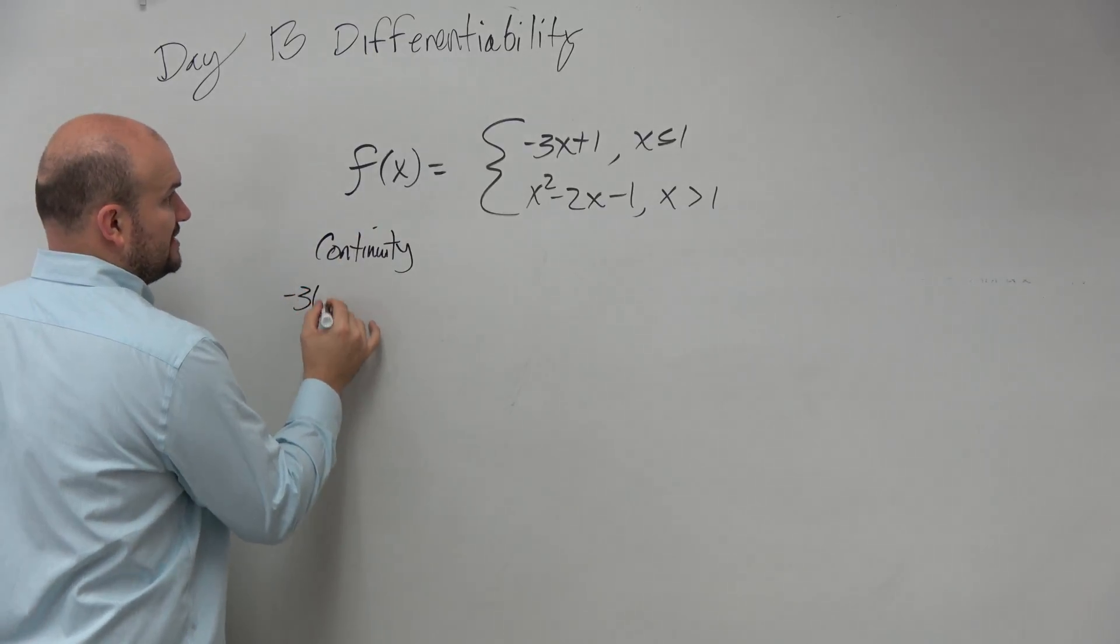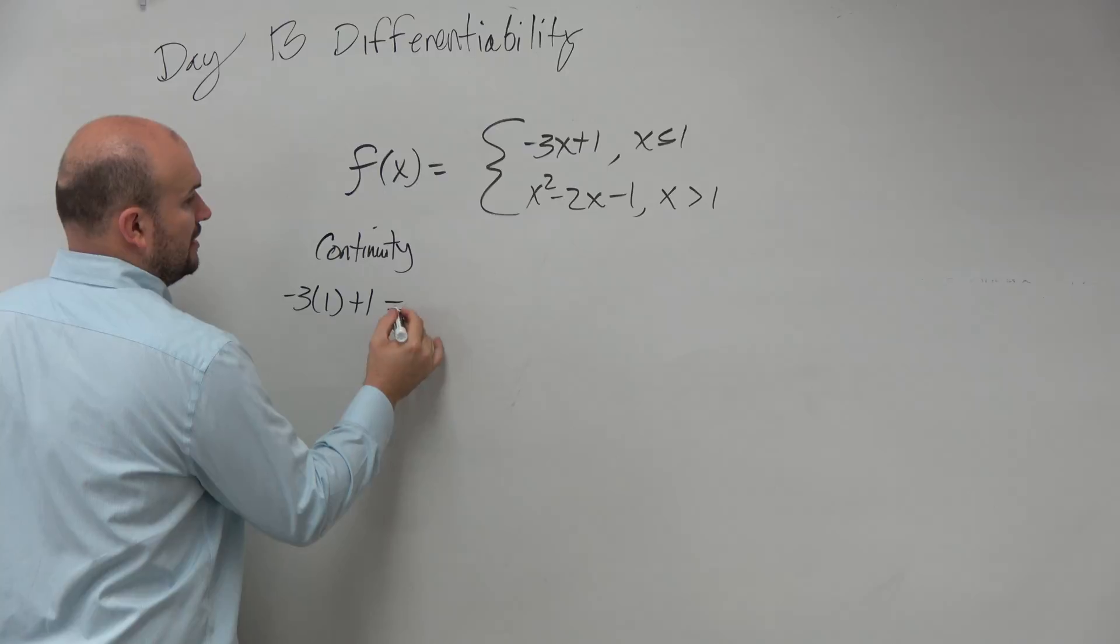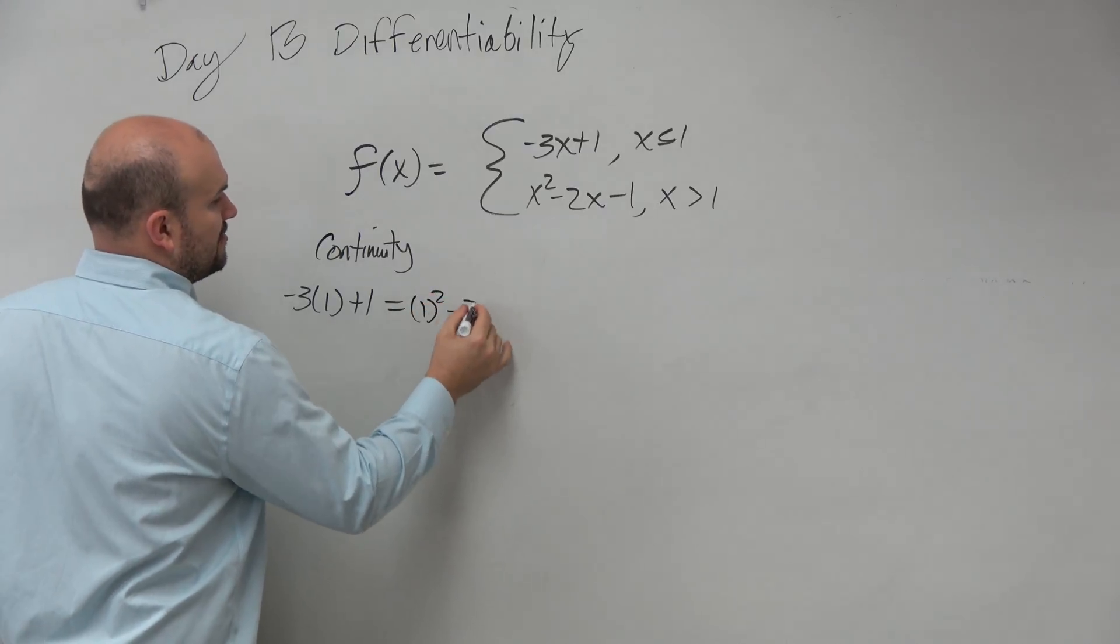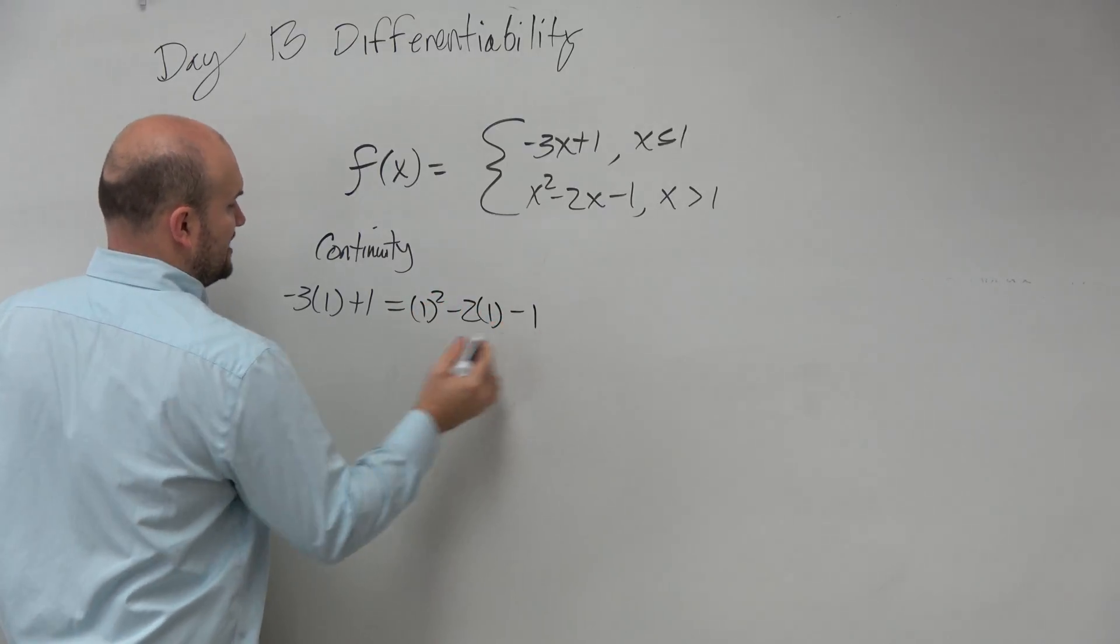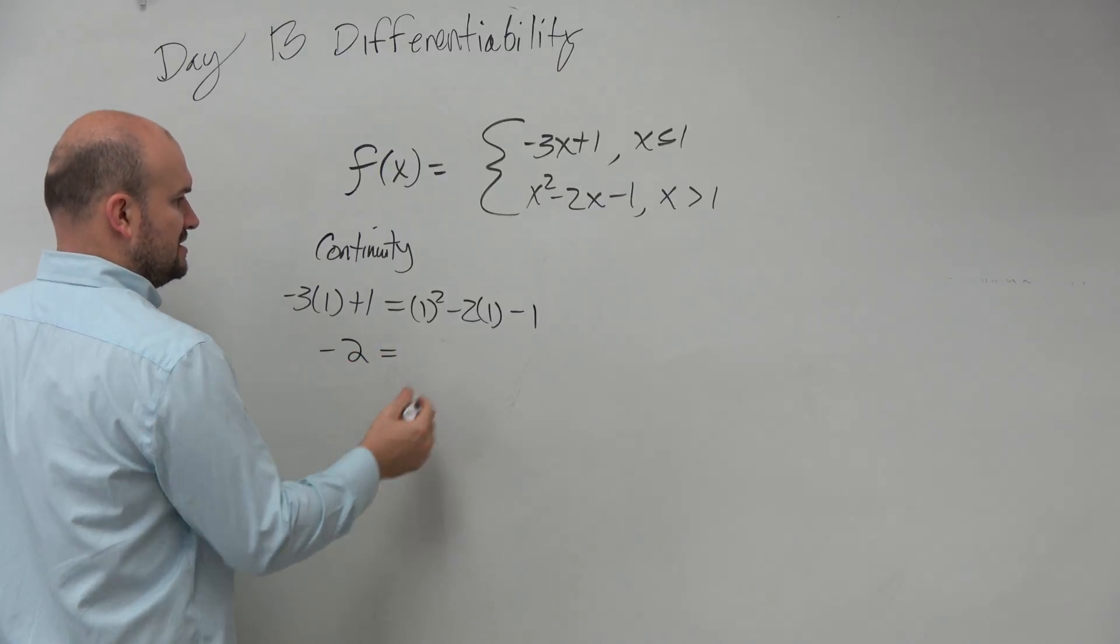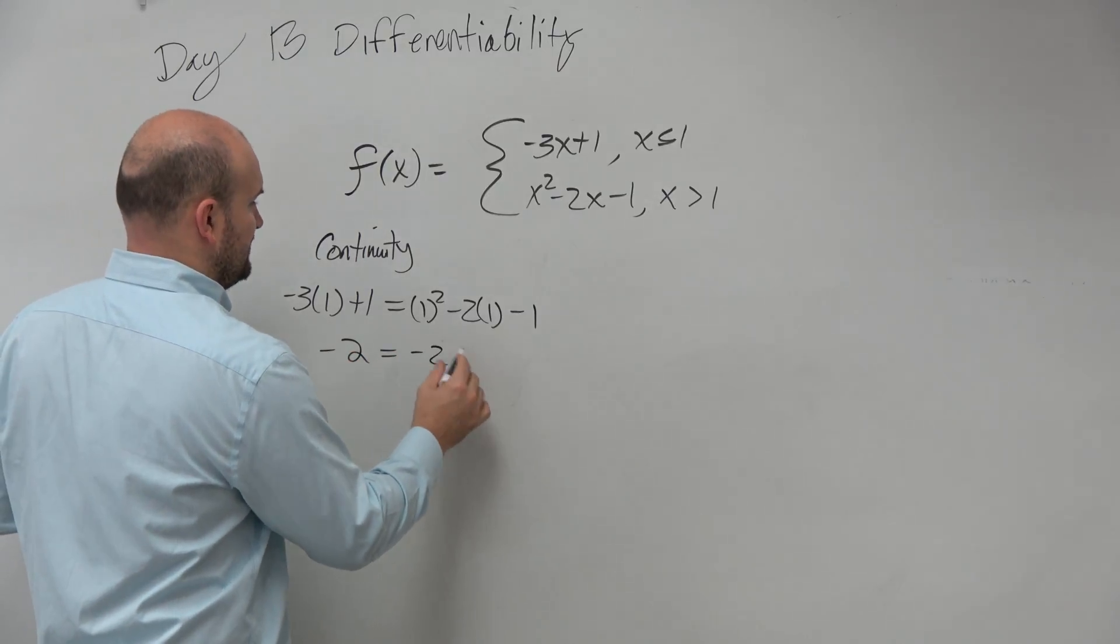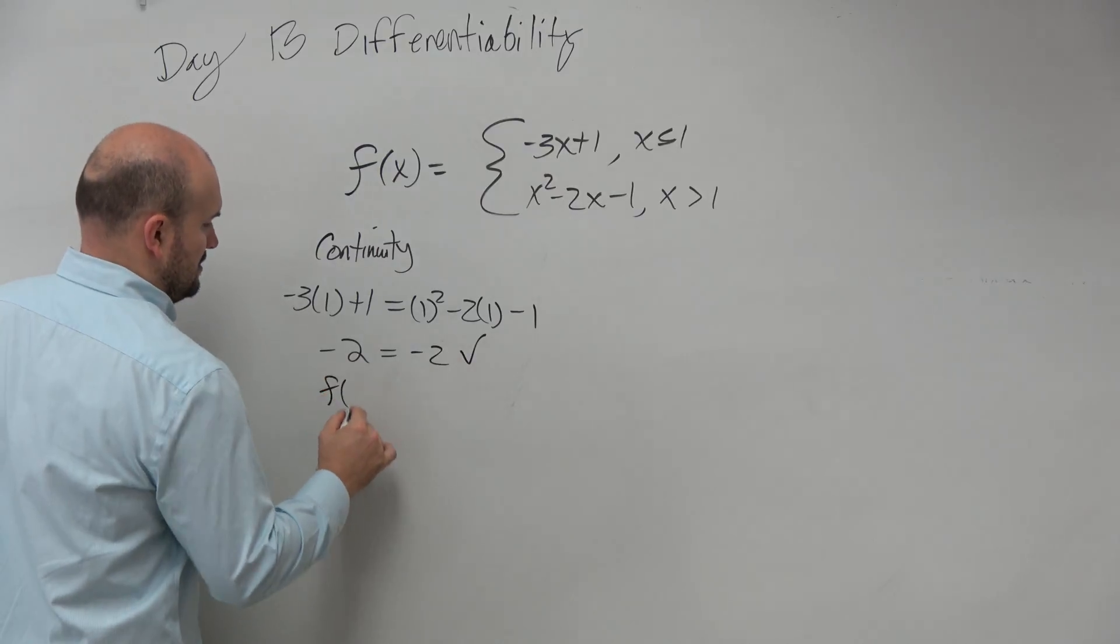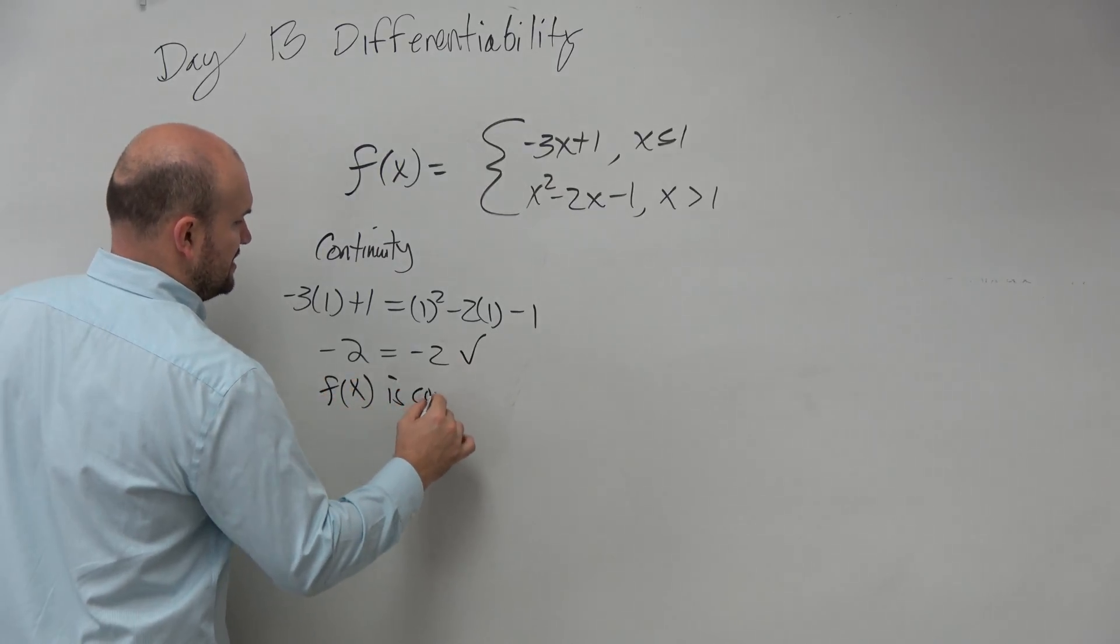So I'm going to say negative 3 times 1 plus 1 is equal to 1 squared minus 2 times 1 minus 1. Therefore, I get here negative 2. This is going to be negative 2 equals negative 2. So f of x is continuous.